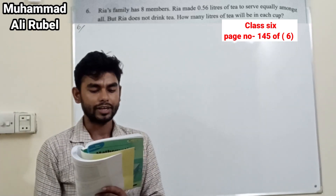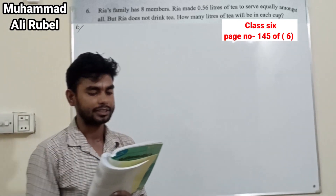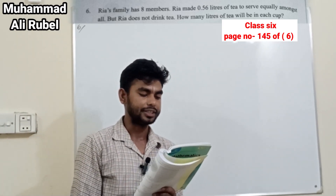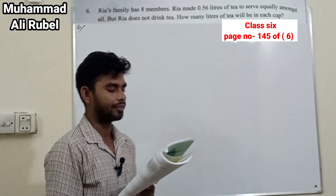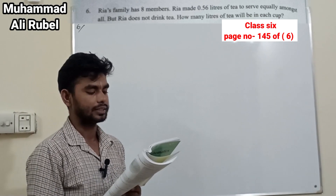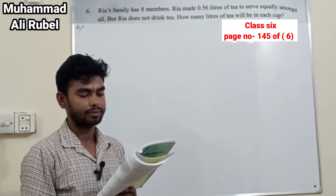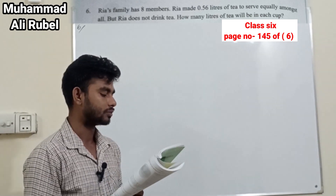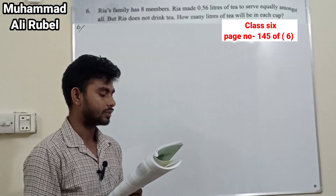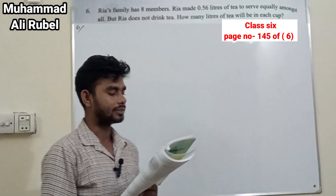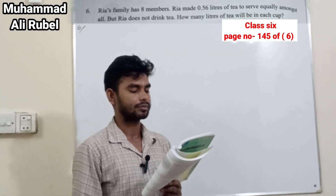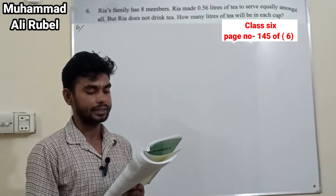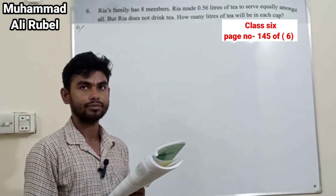Number 6. Ria's family has 8 members. Ria made 0.56 liters of tea to serve equally among all. But Ria doesn't drink tea. How many liters of tea would be in each cup?